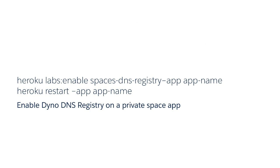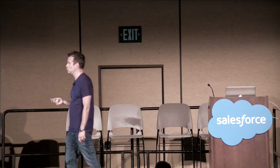To use the Dyno DNS registry — still a beta feature — run 'heroku labs:enable spaces-dns-registry' and restart the app. Importantly, enable this feature on the app that is performing the lookups, not the app that is the target of the lookups.